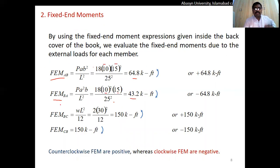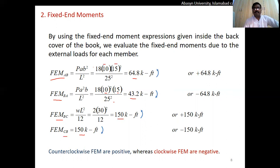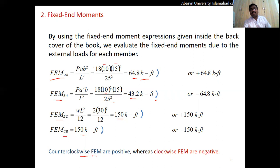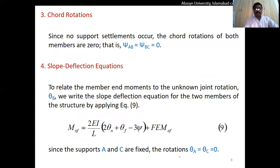For span B-to-C with UDL over the entire span, the formula is WL²/12. Plugging in gives a fixed end moment of 150 kip-ft. The same formula applies in the opposite direction giving minus 150 kip-ft. Anti-clockwise moments are considered positive and clockwise moments negative — this is the sign convention used in the slope and deflection method.